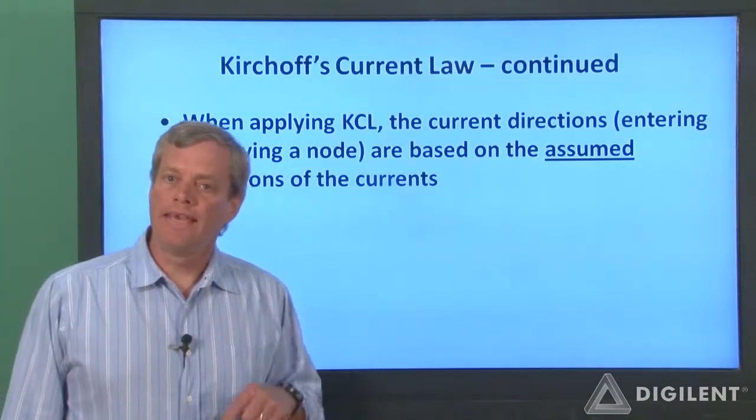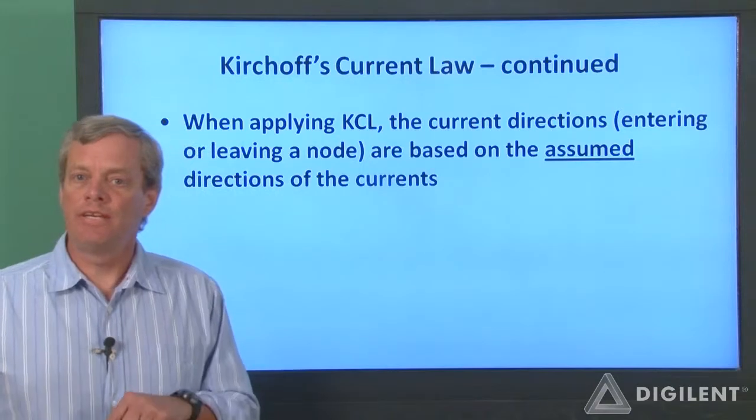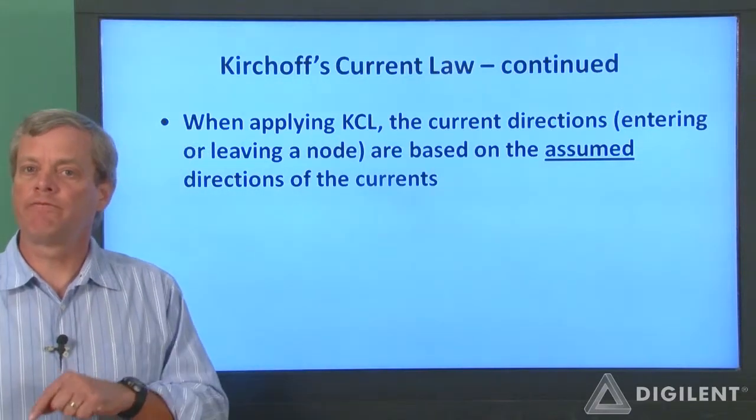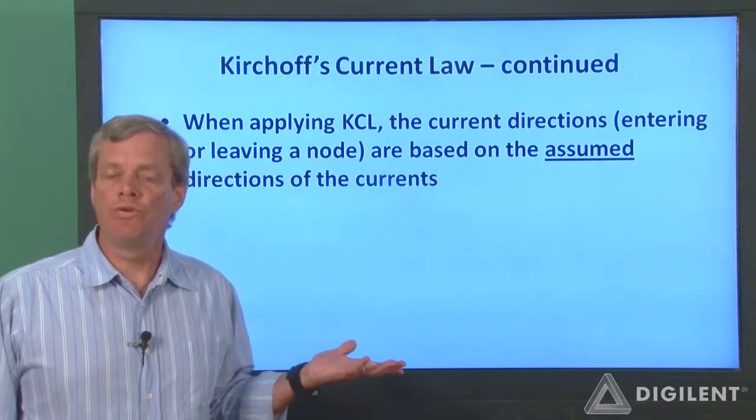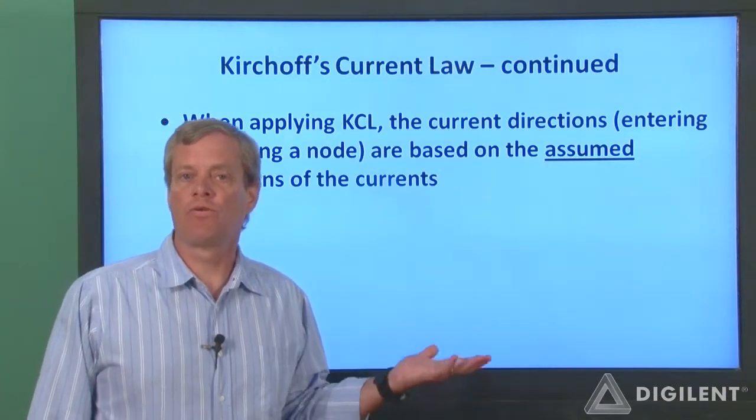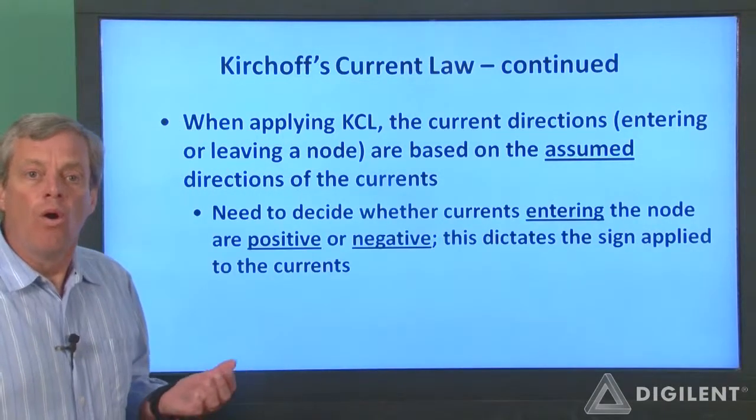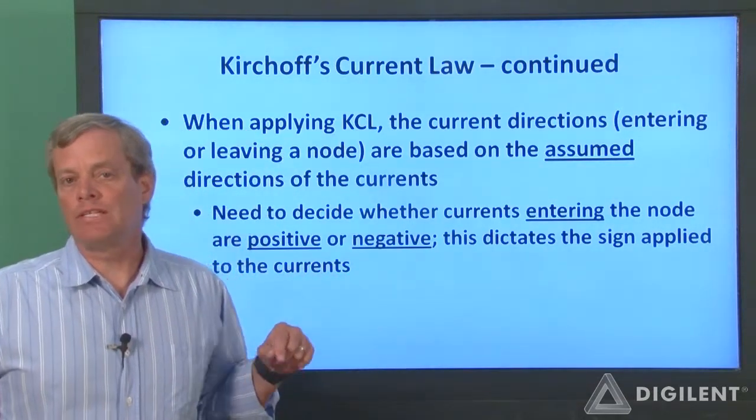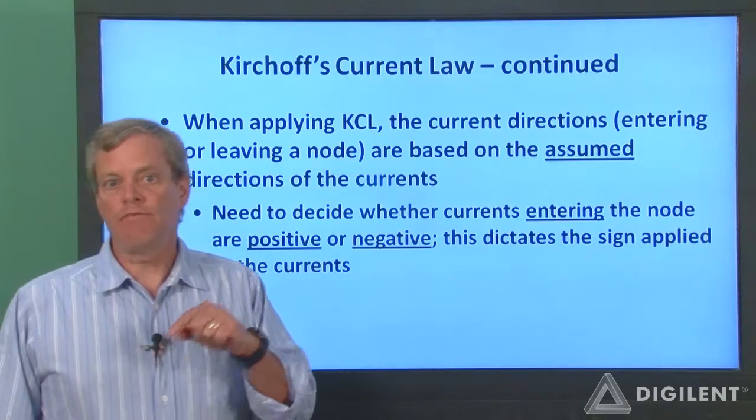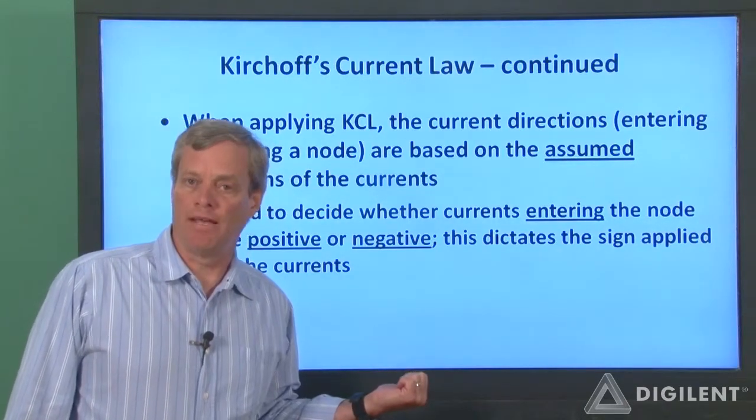Now, before you apply KCL, you need to indicate what your assumed positive current directions are. These assumed directions are what you use to decide whether a current is entering or leaving a node. When you apply KCL, you also need to decide whether you want currents entering the node to be assumed positive or currents leaving the node to be positive.